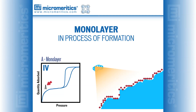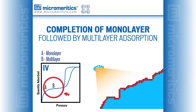Adsorption begins with relatively few molecules adsorbed on the surface as pressure begins to increase. At about 0.05 relative pressure, the filling of the first layer on the solid is being established, which is reflected by the first inflection point A. The linear region of the isotherm, B, is attributed to the multilayer adsorption on the surface.